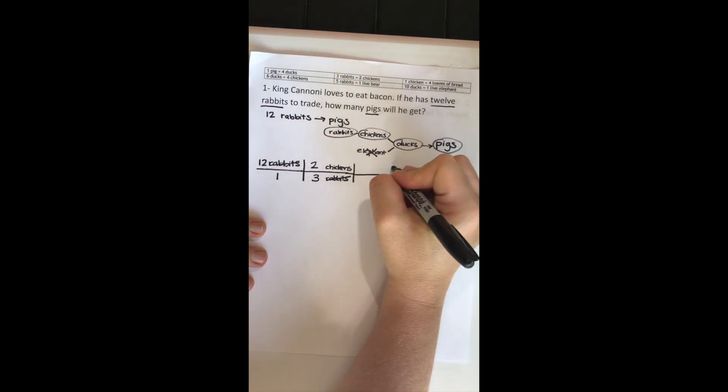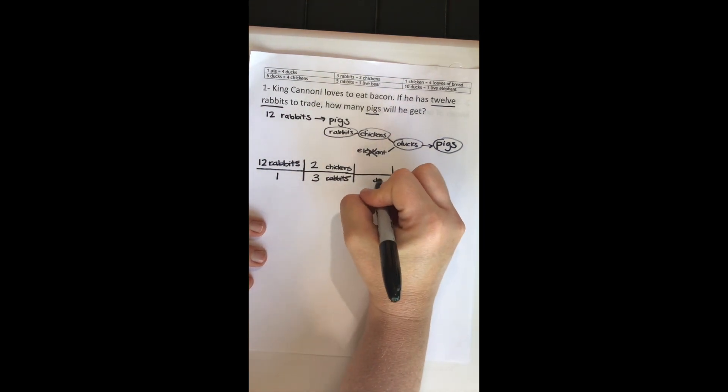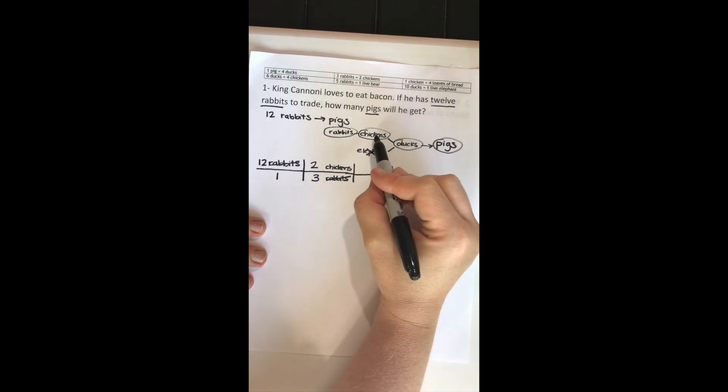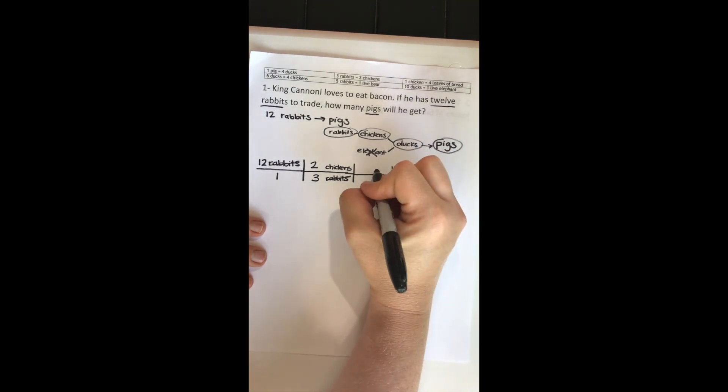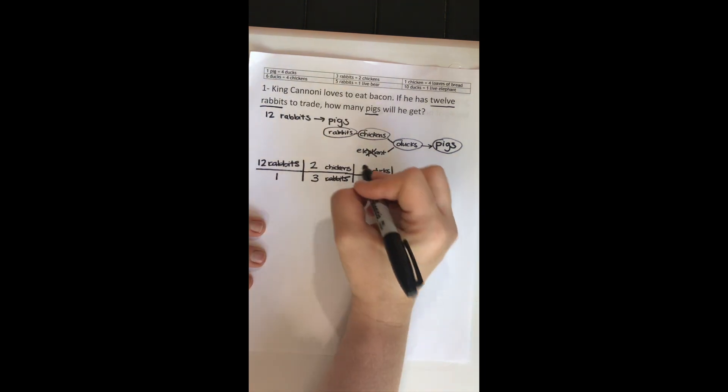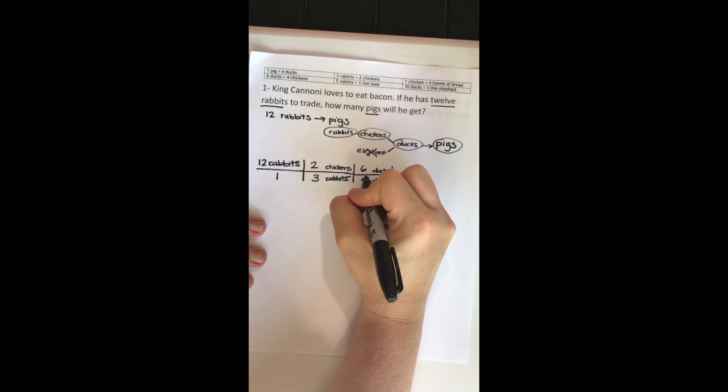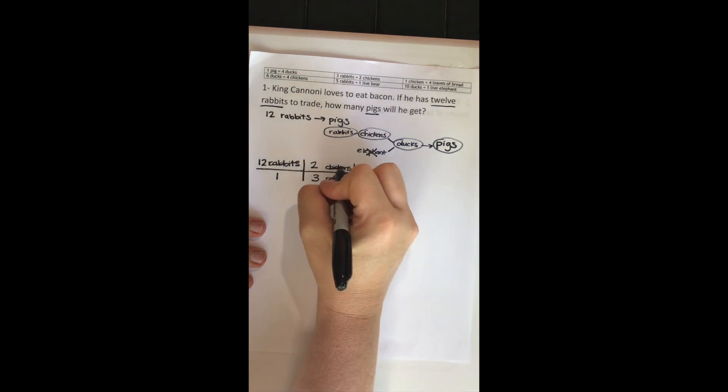This time I'm going to do the same thing. I have chickens on top, that means that whatever I'm converting to, I need chickens on bottom. This time I said I was going from chickens to ducks, so that tells me that ducks are going on top. When I look at my conversion factor, it tells me that six ducks is equal to four chickens. My chickens are going to cancel out. Now I have ducks.